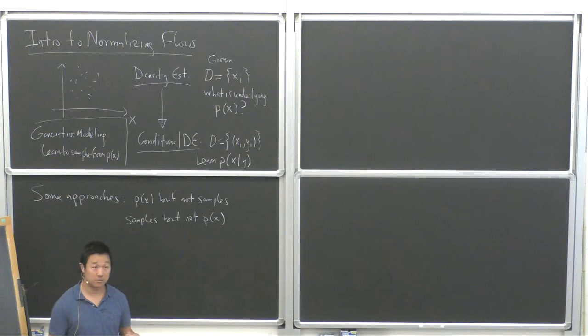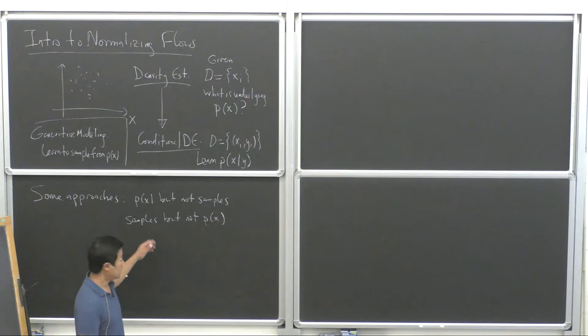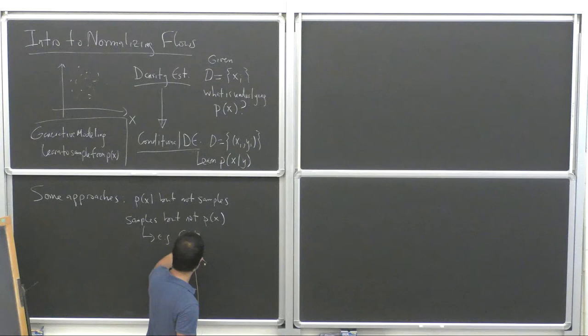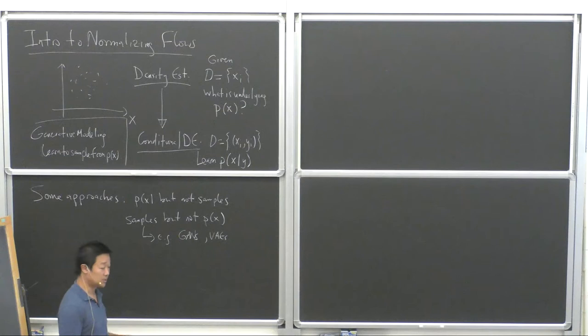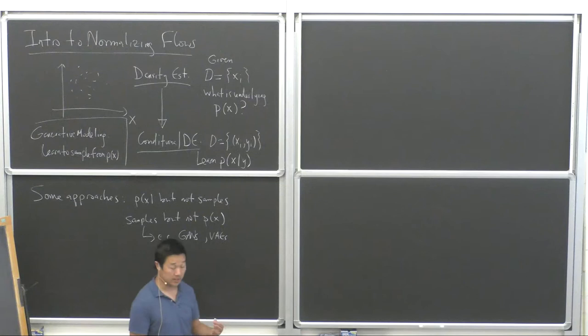You might ask: how is it possible to draw samples from a distribution and not be able to tell you numerically what it is? This is actually what two other famous generative modeling frameworks do. They learn the probability density implicitly — there's no way to extract it directly from GANs or VAEs.